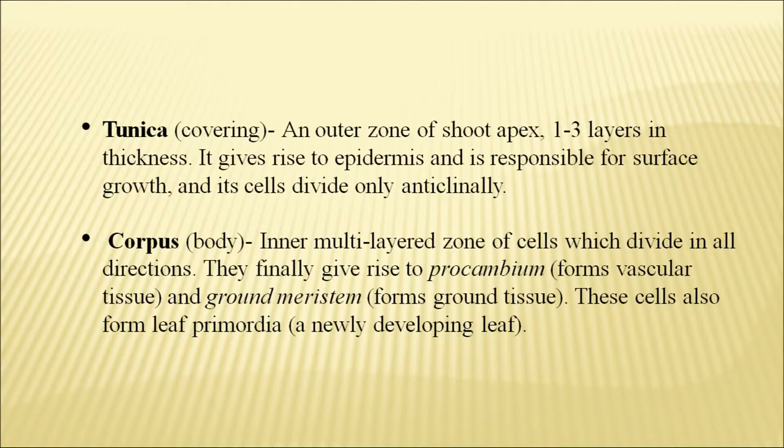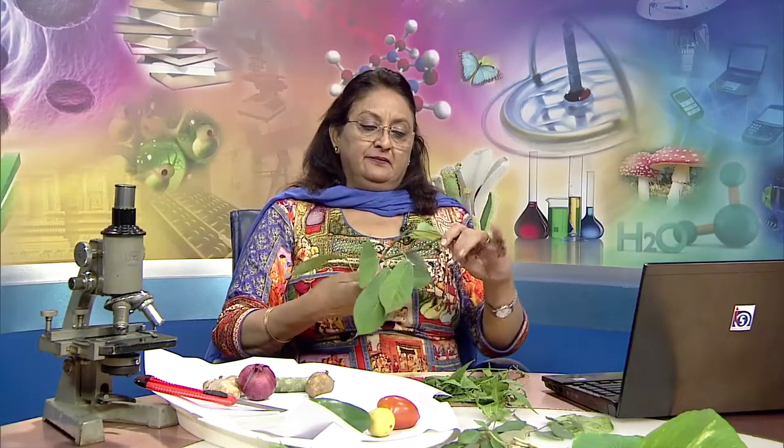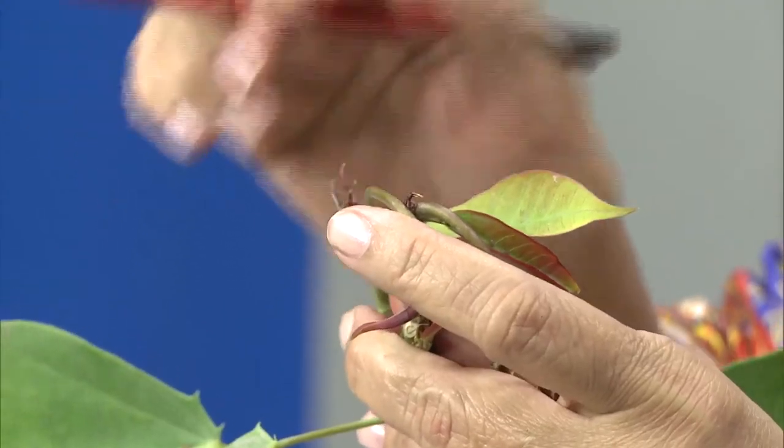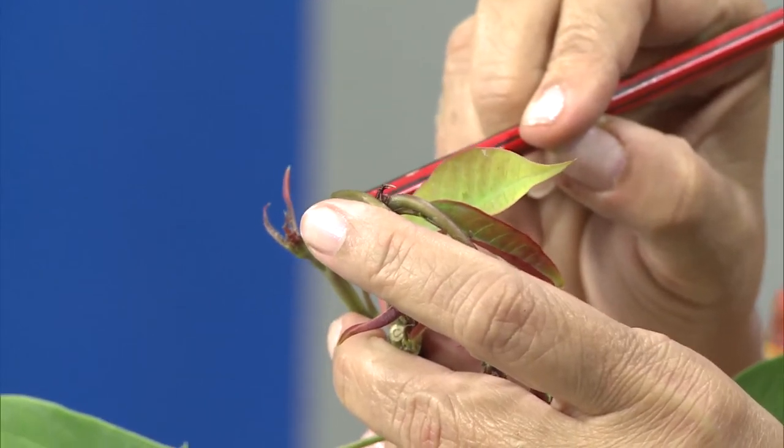The ground meristem forms the ground tissue, which gives the girth of the stem. These cells also form the leaf primordia — meaning a newly developing leaf. Looking at the example, the small baby leaves visible at the shoot tip are the future leaves, and the inner tissue represents the leaf primordia. This is how various tissues of the stem apex contribute to making future body parts of the stem.